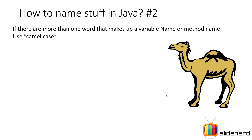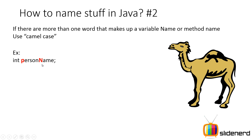Next we come to the issue of camel case. You've probably heard this word before if you're from C or C++. If there is more than one word stuck together to make up a variable name or a method name, we use something called camel case. For example, `int personName` — 'person' is one word, 'name' is another word, both stuck together to make a single variable name.